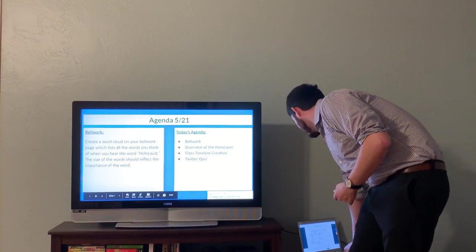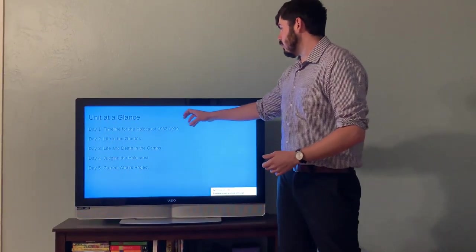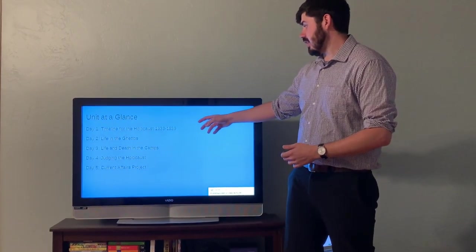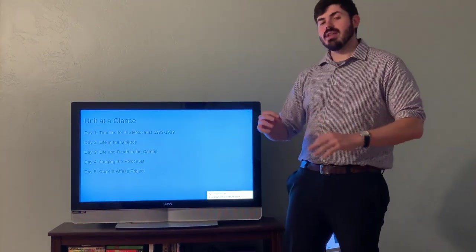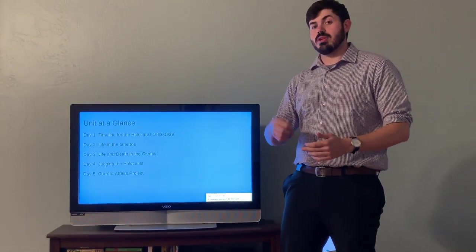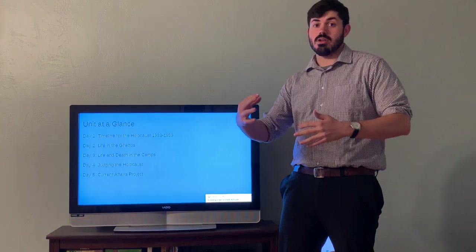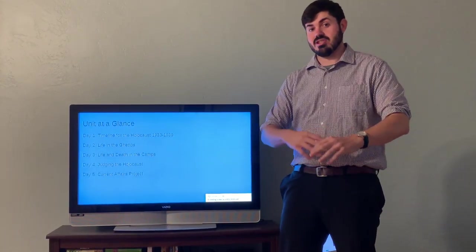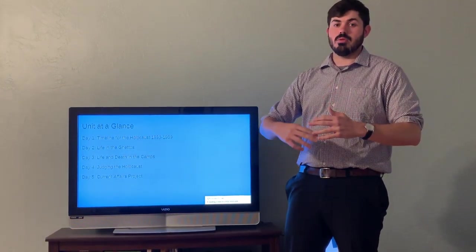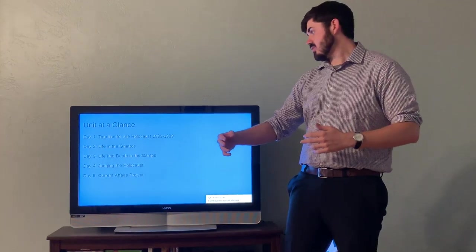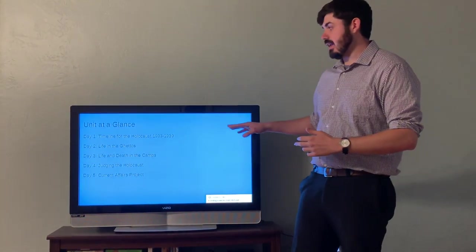So the unit at a glance. So again, this is five days, just a mini-unit. Day one will be going through the timeline for the Holocaust, 1933 to 1939. I do that because only in 1939 does Hitler come up with the final solution and actually start to go through mass executions of Jews. So we're just looking at that beginning period.